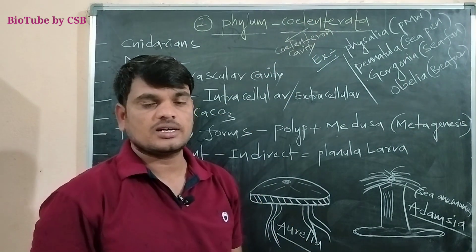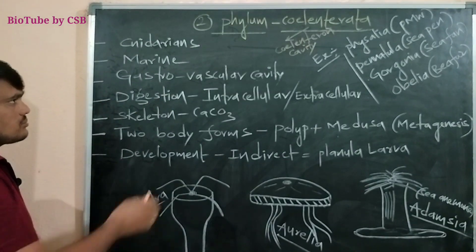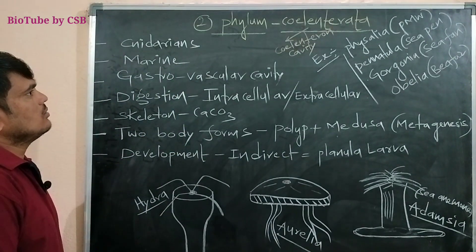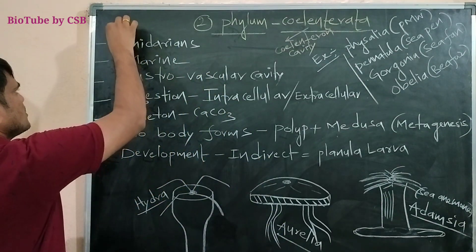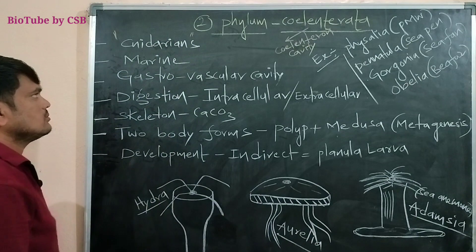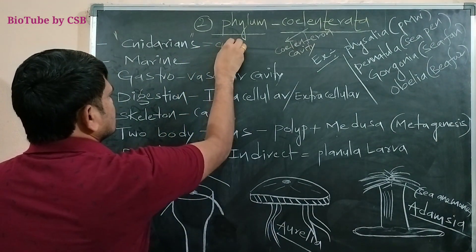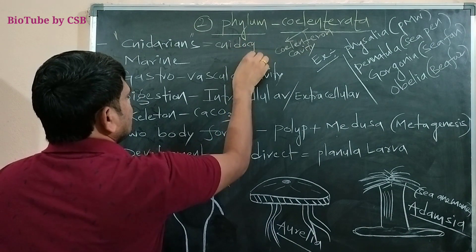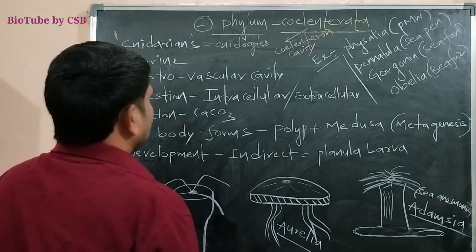Let me give the general characters of phylum Coelenterata. Coelenterata includes a number of animals. These are commonly called Cnidarians because they are having cnidocytes. Cnidocytic cells are present. Cnidocytes are present in them.